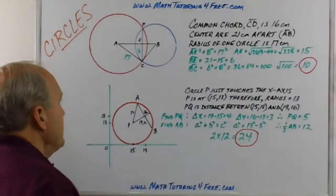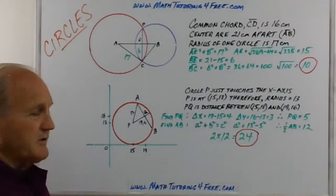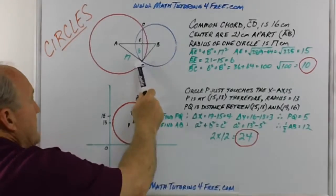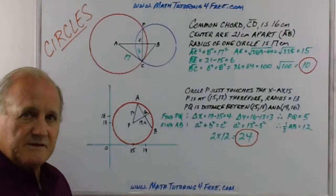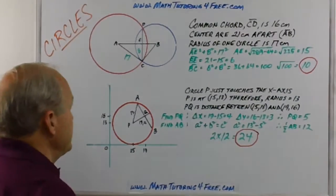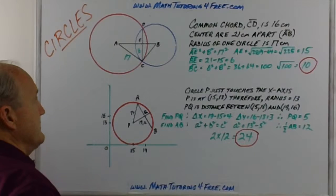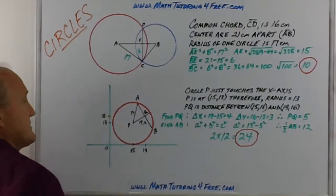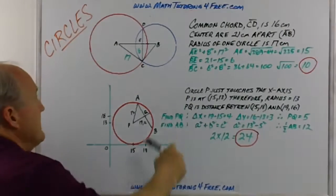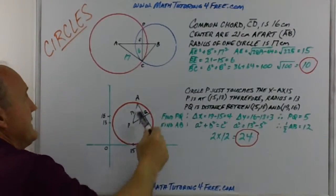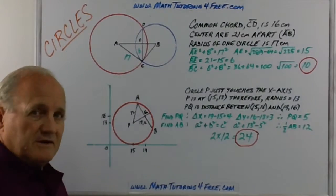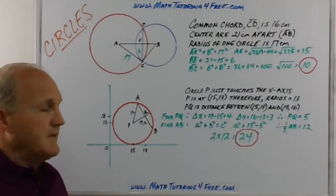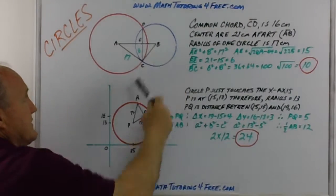In the first case, we have two circles that have a common chord, so they intersect each other. They're giving us the length of the common chord and the length of one of the radii of the larger circle. They're asking us to find the radius of the smaller circle. Again, we draw that perpendicular that connects the centers of the two circles and forms a perpendicular with the chord. The chord is 16 inches long, the radius for the larger circle is 17, and we need to find the radius of the smaller circle.